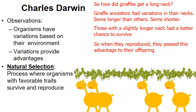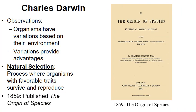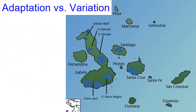Natural selection was first outlined in 1859 when Darwin published 'On the Origin of Species' — one of the most, if not the most, influential science books ever written. It really started us on the journey of trying to understand how life has evolved over time.